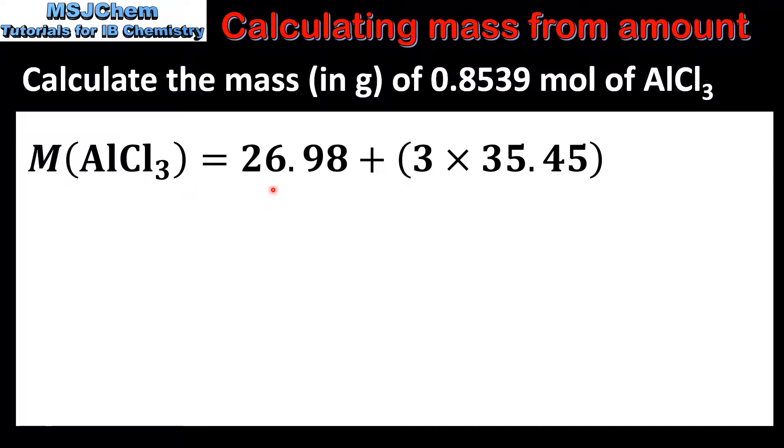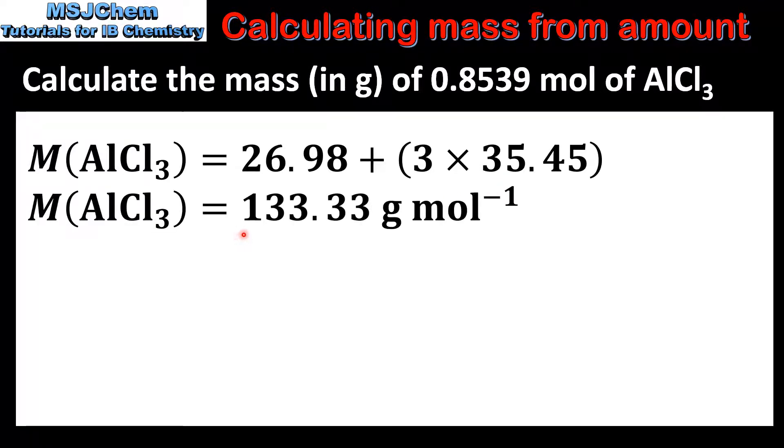The relative atomic mass of aluminium is 26.98 and for chlorine it's 35.45. When we add these together we get a molar mass of 133.33 grams per mole.